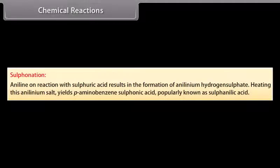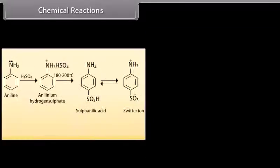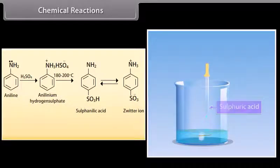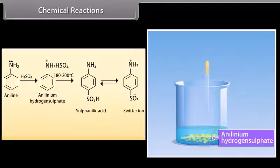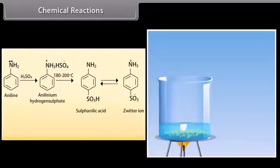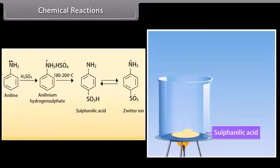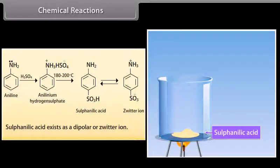Sulfonation: Aniline on reaction with sulfuric acid results in the formation of anilinium hydrogen sulfate. Heating this anilinium salt at 180–200°C yields para-aminobenzenesulfonic acid, properly known as sulfanilic acid. Sulfanilic acid exists as a dipolar or zwitterion.